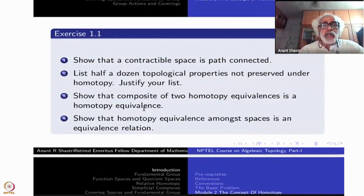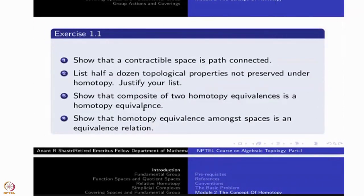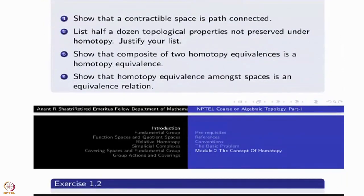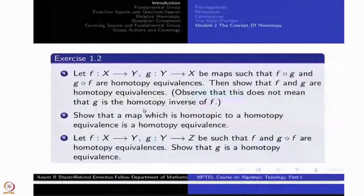Show that composite of two homotopy equivalence is a homotopy equivalence. Show that homotopy equivalence among the spaces is an equivalence relation. I have already told you how these things are but now you have to write down full details of these exercises. There is nothing very hidden in this one.